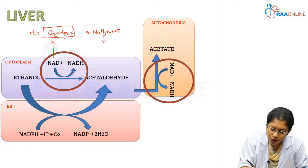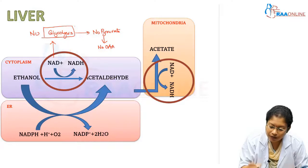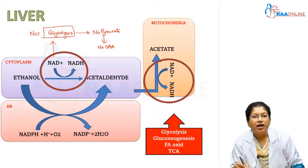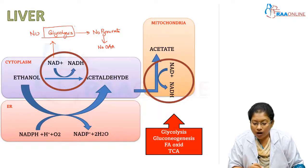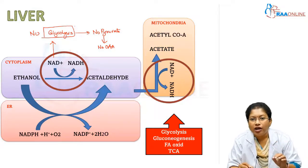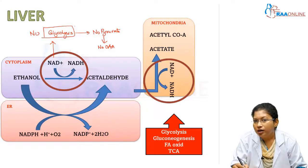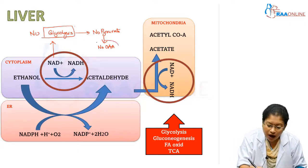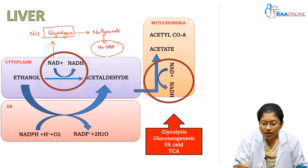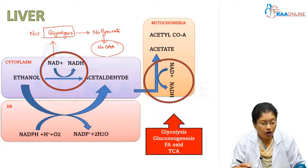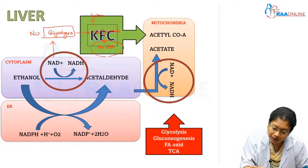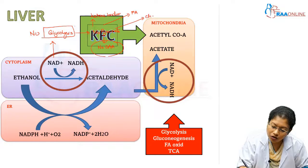If there is no pyruvate, there is no oxaloacetate. During alcohol toxicity, there is no glycolysis, gluconeogenesis, fatty acid oxidation, or TCA cycle. Acetate can form acetyl-CoA by the addition of CoA, but this acetyl-CoA cannot combine with oxaloacetate to enter the TCA cycle because oxaloacetate availability is nil. So, the acetyl-CoA enters other pathways to produce ketone bodies, fatty acids, and cholesterol synthesis.